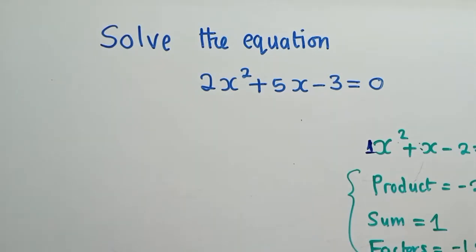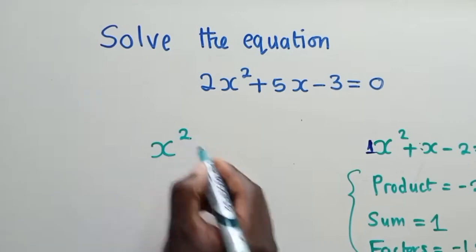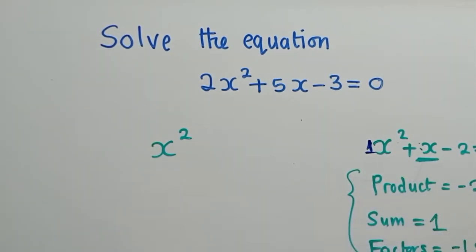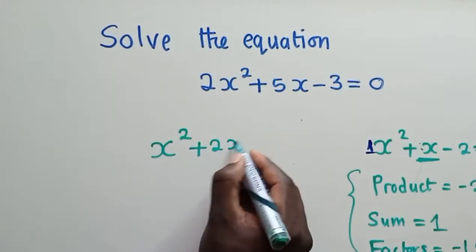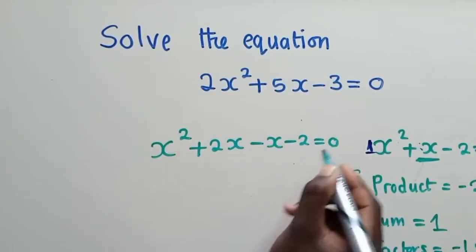Okay, so once we reach this point, we now arrange our work. So we're going to say x power two, this x power two, where there is x here we substitute. We are going to use the factors. That's the reason why we decided to find the factors. So it will be plus two x minus x minus two is equal to zero.